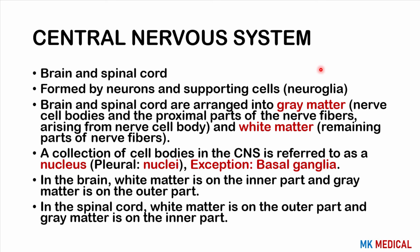The brain and the spinal cord are arranged in two types of matter: gray matter and white matter. Gray matter appears gray because of the Nissl bodies found in the cell bodies and proximal parts of the nerve fibers. So cell bodies are referred to as gray matter. White matter is the remaining parts of the nerve fibers — the axons. A collection of cell bodies found in the CNS is referred to as a nucleus, plural nuclei.